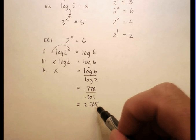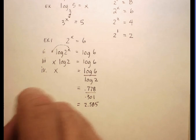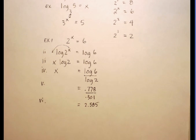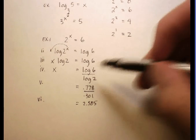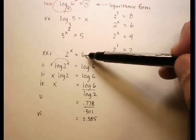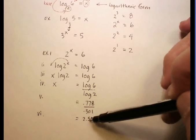A lot of teachers like to go out to three places past the decimal point, and I am one of those as well. So let's see what we have here. And let's see if it makes sense in the context of what we said earlier. We're saying that 2 to the x is equal to 6. That x is 2.585.